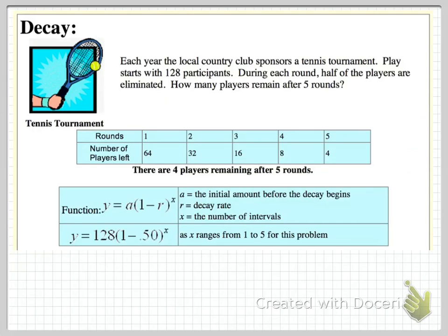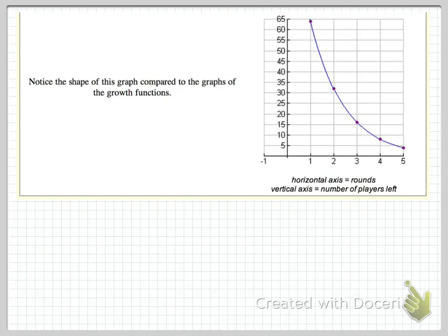The decay rate is going to be a negative value. So putting in the figures we have, we'll give you the equation for the data in the table. Note that the shape of this curve is similar to the exponential growth.